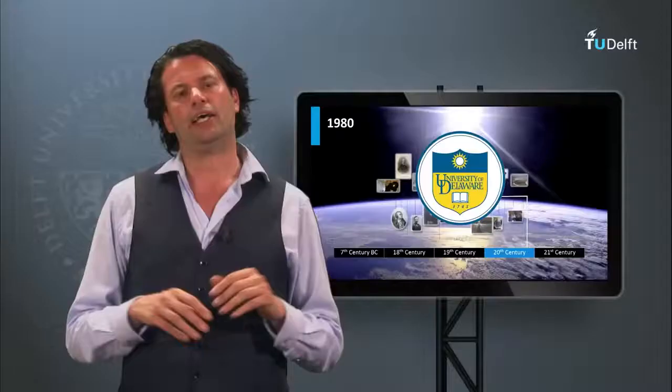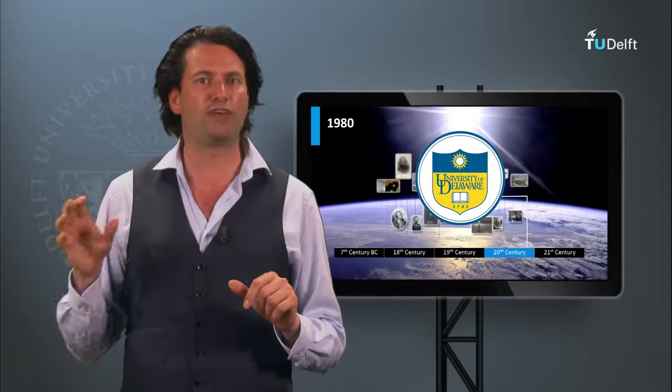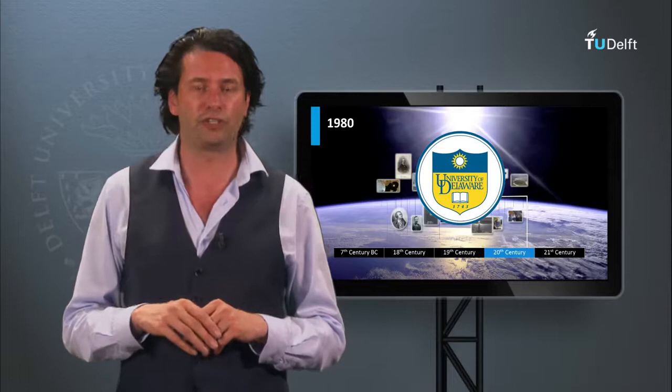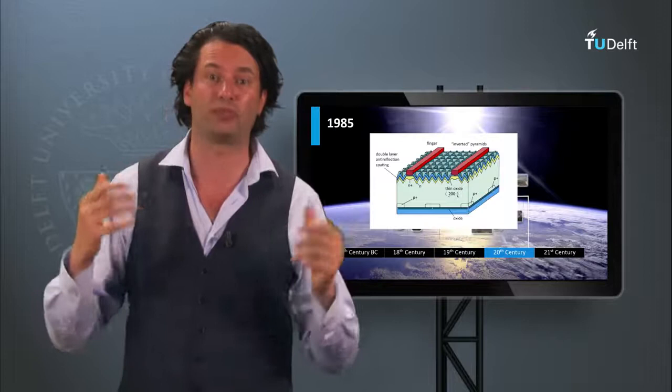In 1980 the first thin film solar cells based on copper sulfide and cadmium sulfide with conversion efficiencies above 10% were demonstrated at the University of Delaware. In 1985 at the University of New South Wales in Australia, crystalline silicon solar cells with efficiencies above 20% were demonstrated. In week 4 the background and current state of high-efficiency crystalline silicon PV devices will be discussed.